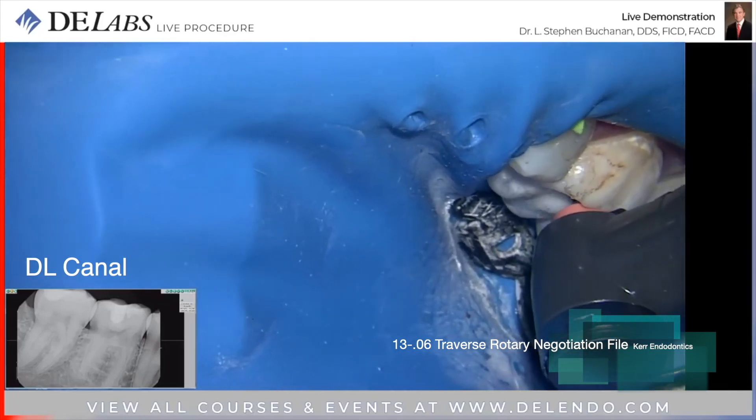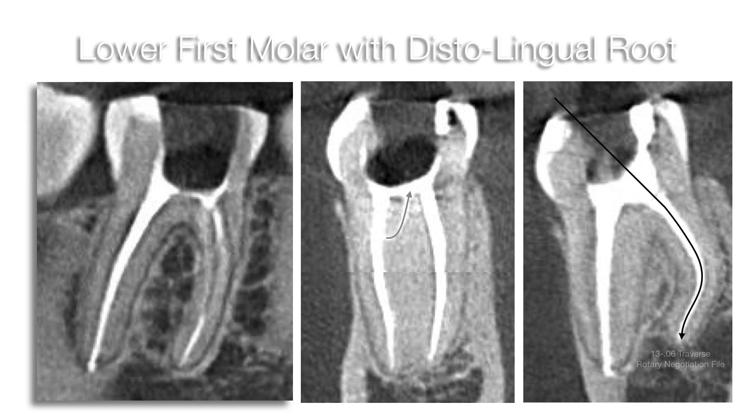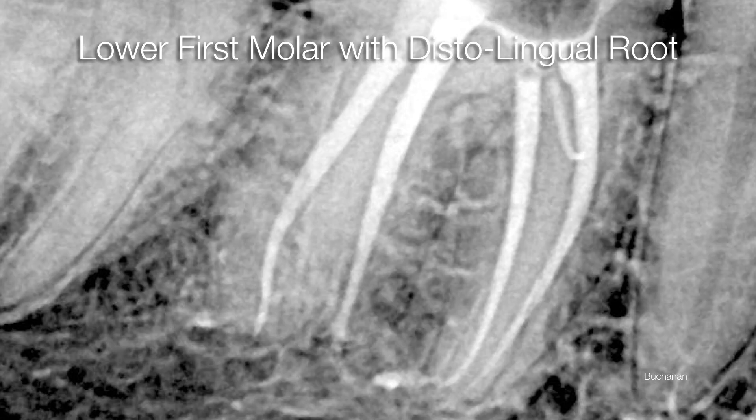And when it hits length, bang, it just stops. As you can see, we're to the full length of the file there. There's a 25 millimeter canal. This canal and the two mesial canals had severe curvatures.